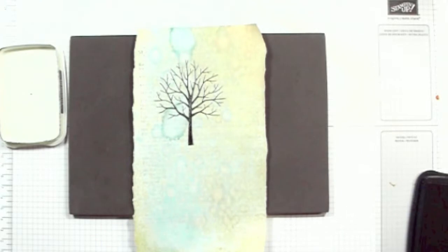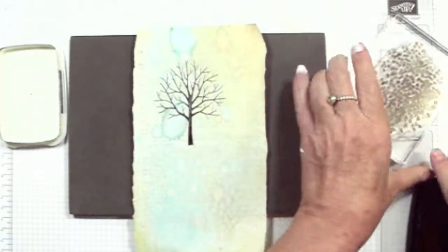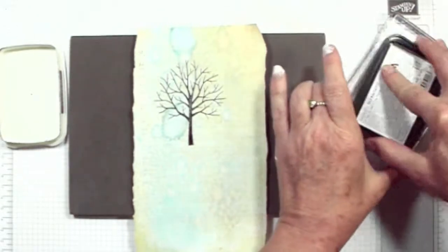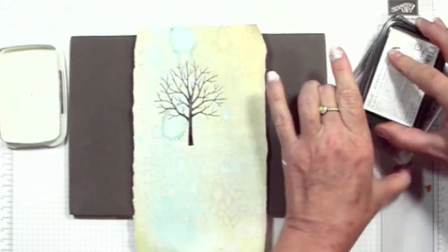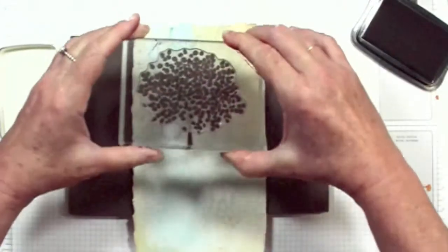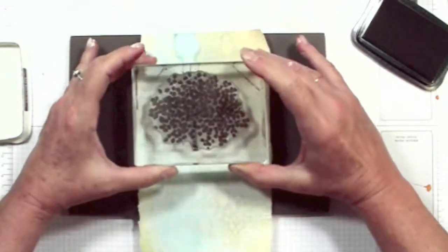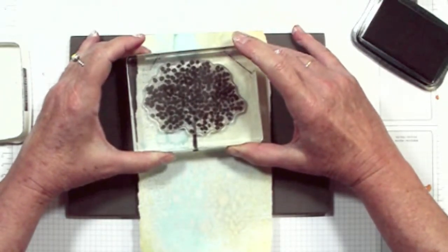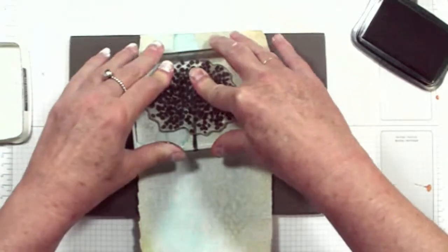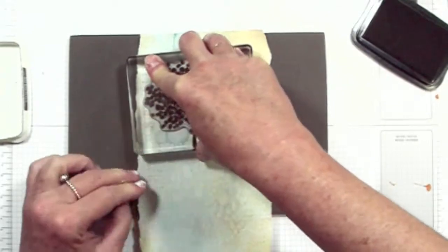It's our branches, and we'll just pop the leaves on a block. Ink that up with the Memento. And the beauty of the polymer stamp is that we can now see exactly where we want to position our leaves.